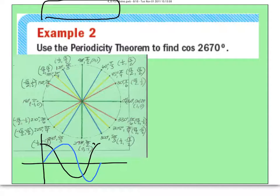Okay, let's look at a more complicated one. Use the periodicity theorem to find the cosine of 2,670 degrees. It's a pretty big number. Easiest way to do this is to figure out how many times we go around the circle. So, I'm going to do 2,670 divided by 360. That actually is 7.4167.